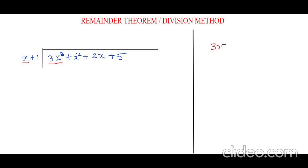So this 3x² I have to write in the quotient. Now I'm going to multiply 3x² with x, which will be 3x³, and then 3x² will be multiplied with 1, so it is plus 3x².